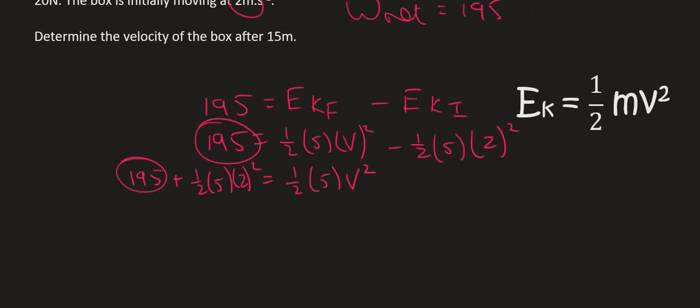And so now it's just a case of solving. So if you type in the left hand side on your calculator, you end up with 205. And then half of five is just 2.5 v squared. You can then divide by 2.5 and then take the square root. And so that's going to give us an answer of 9.05, 9.05 meters per second.